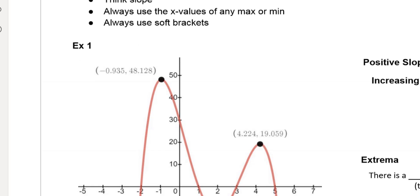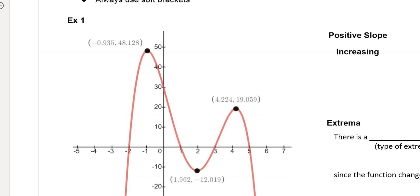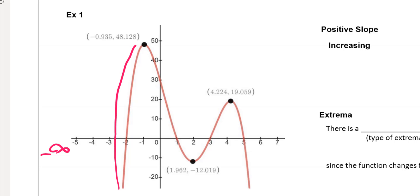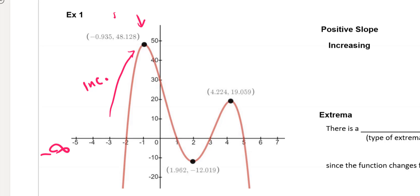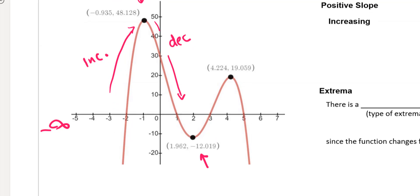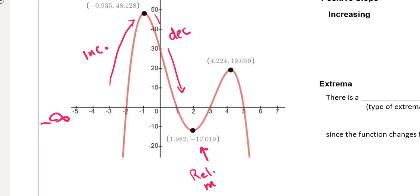Let's analyze our curve. Starting on the leftmost side — all the way out at negative infinity — and coming up the curve, that generally has a positive slope, which means it's increasing. I'm going to be increasing all the way up to the top of that hill, which is going to be an absolute max. Then I turn around and start decreasing — going down until I get to this valley, which is a relative min because there are spots lower. Then I turn around and increase again, going up to a relative maximum.